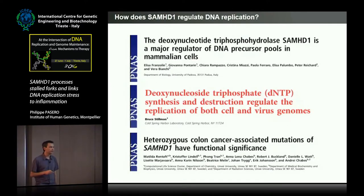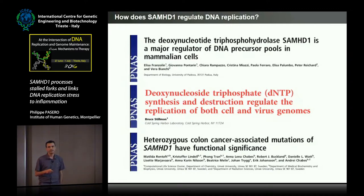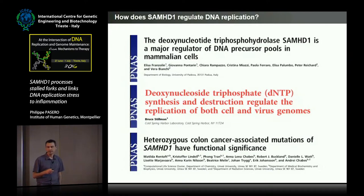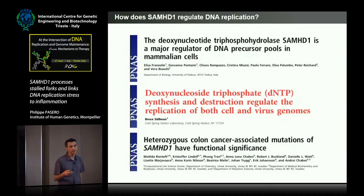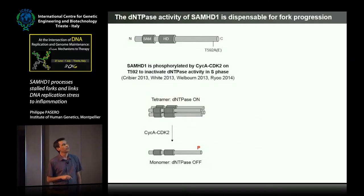What is the mechanism by which SAMHD1 is regulating fork progression? We know that it's degrading the dNTP pools in non-cycling cells, but also it's regulating the balance between the pools, so it could be that in the absence of SAMHD1, fork progression is affected because of the imbalance between the dNTP pools.